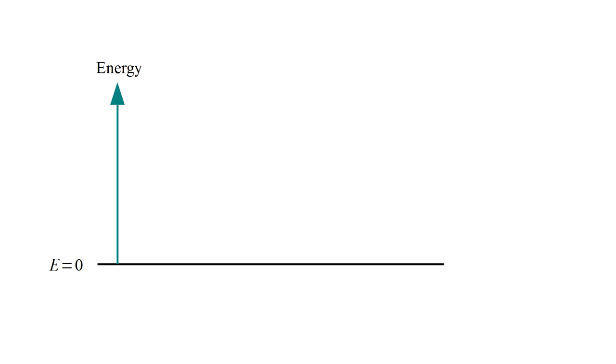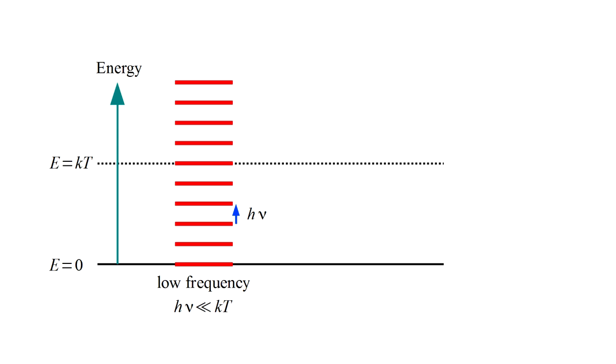The assumption worked because at a temperature t there is an average thermal energy kt available to excite a radiation mode. Here k is Boltzmann's constant. For low frequencies, the energy quantum is much less than kt. The mode can have an energy of kt, which is the classical prediction, by containing some number of quanta.